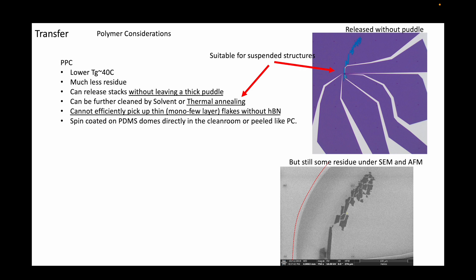Also, even though there is some level of residues, it is still several orders of magnitude less than the puddles left behind from PC transfer. These facts make PPC a great transfer polymer to transfer 2D or complex oxide flakes that are more than several nanometers in thickness.